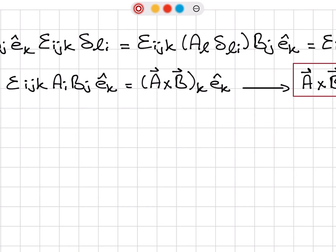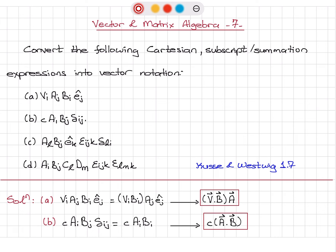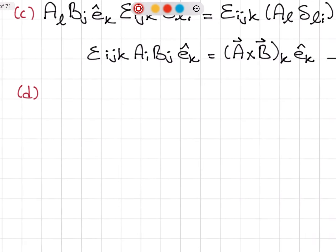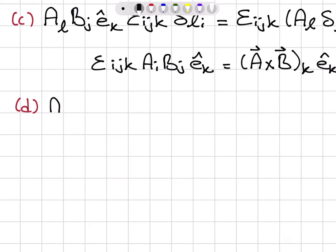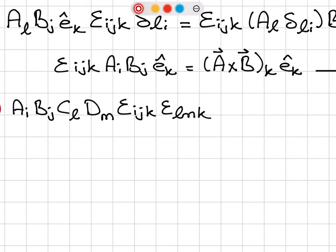I recognize that ε_ijk A_i B_j Ê_k is the k-th component of A×B in the Ê_k direction. So the k-th component of A×B is ε_ijk A_i B_j, and multiplied by Ê_k this gives the full vector A×B.